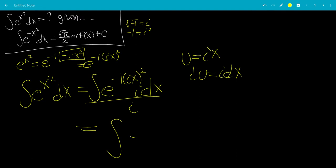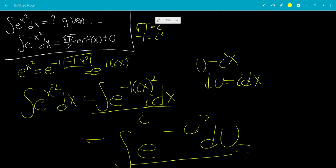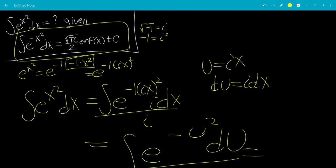So this will be the integral of e to the minus u squared. Now we have du over i. So now we're going to plug this integral into here. Instead of x, we're going to use u.